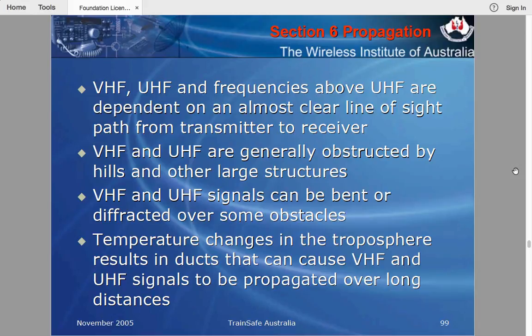UHF and VHF signals can be bent or diffracted over some obstacles — this is called diffraction. Also, temperature changes in the troposphere can result in ducts that cause VHF and UHF signals to propagate over long distances, though generally speaking it is line of sight.